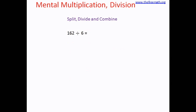Let's look at division. The method is the same: split, divide, and combine. The example is divide 162 by 6. Can we split it as 160 and 2? No, because 160 is not divisible by 6. How do we know? The sum of digits of 160 is 6 plus 1, which equals 7, and 7 is not divisible by 3, so 160 is not divisible by 6.